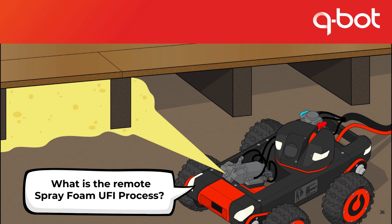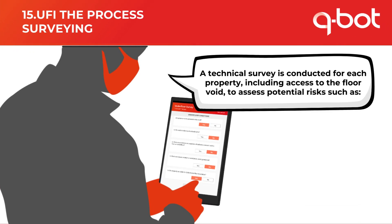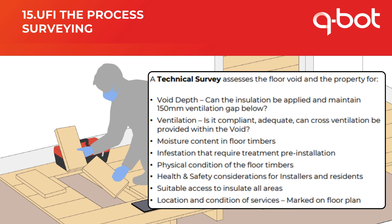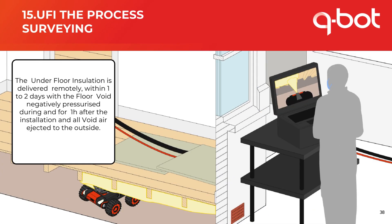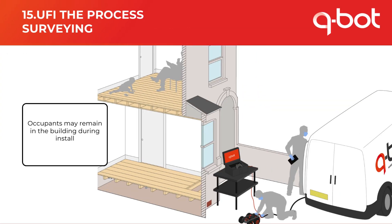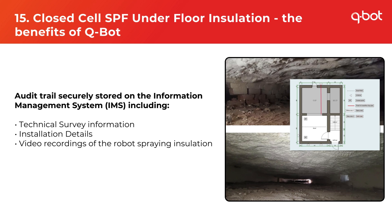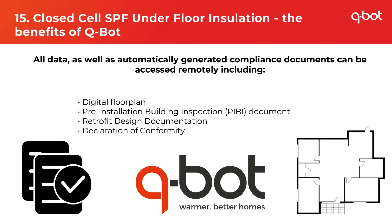The spray foam UFI process starts with a technical survey for each property, including access to the floor void to assess potential risks such as ventilation compliance, moisture content, infestation and the physical condition of the floor — essentially a full underfloor health check. The underfloor installation is delivered remotely within one to two days and the floor void is negatively pressurised during and for one hour after installation. Occupants can remain in the house during installation, though the ground floor should be vacant for up to two hours post-install. Our information management system securely stores all technical survey information, installation details, and video recordings of the robot spraying installation, including digital floor plans, pre-installation building inspection documents, retrofit design documentation and declaration of conformity.